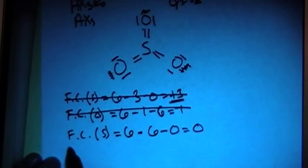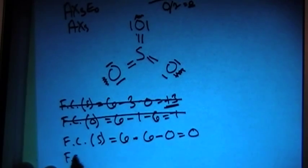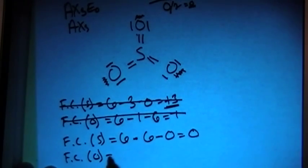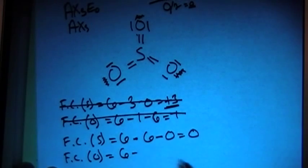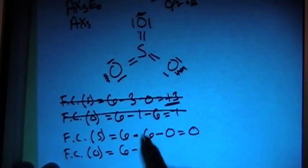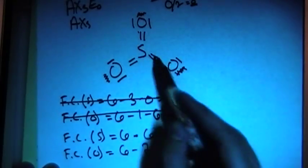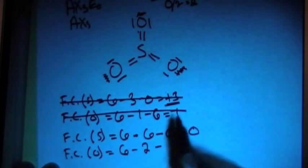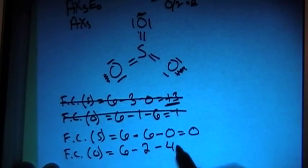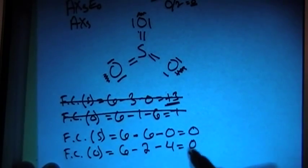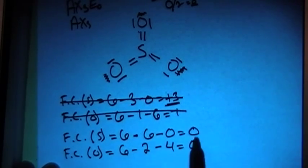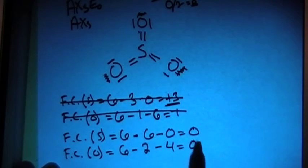Now we can check the formal charge on each oxygen, and that is 6 valence brought in, minus 2 bonds for each oxygen, and then minus 4 non-bonding electrons for each oxygen, and that gives us a formal charge of 0. Notice how these add up to 0, but these are 0.